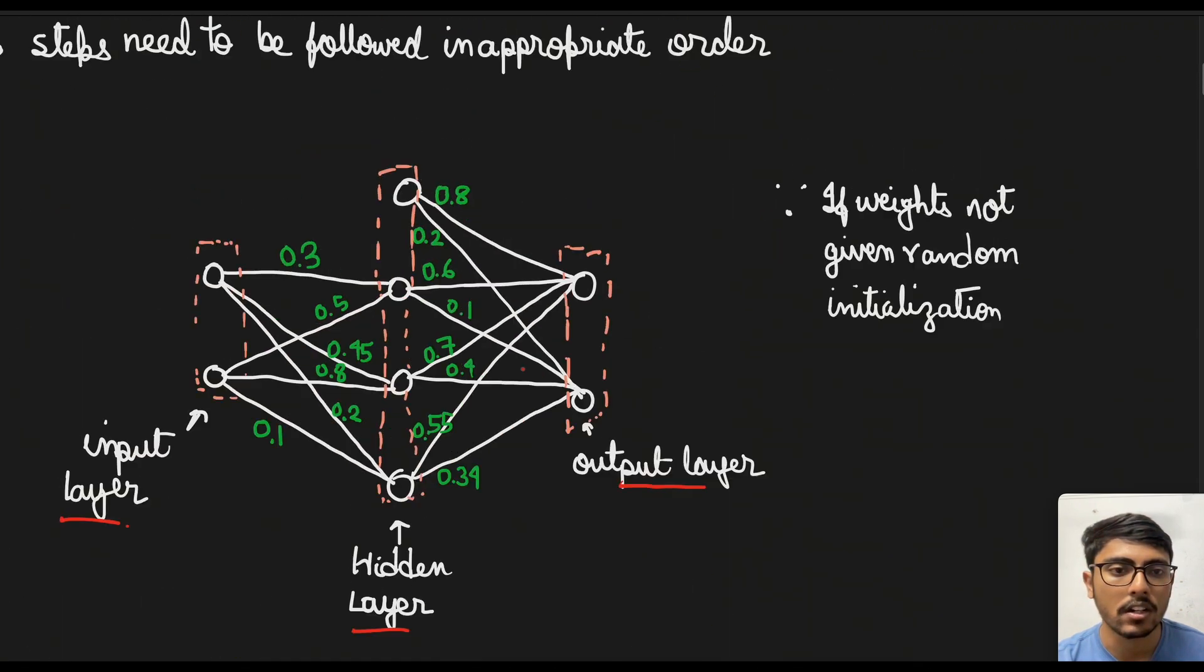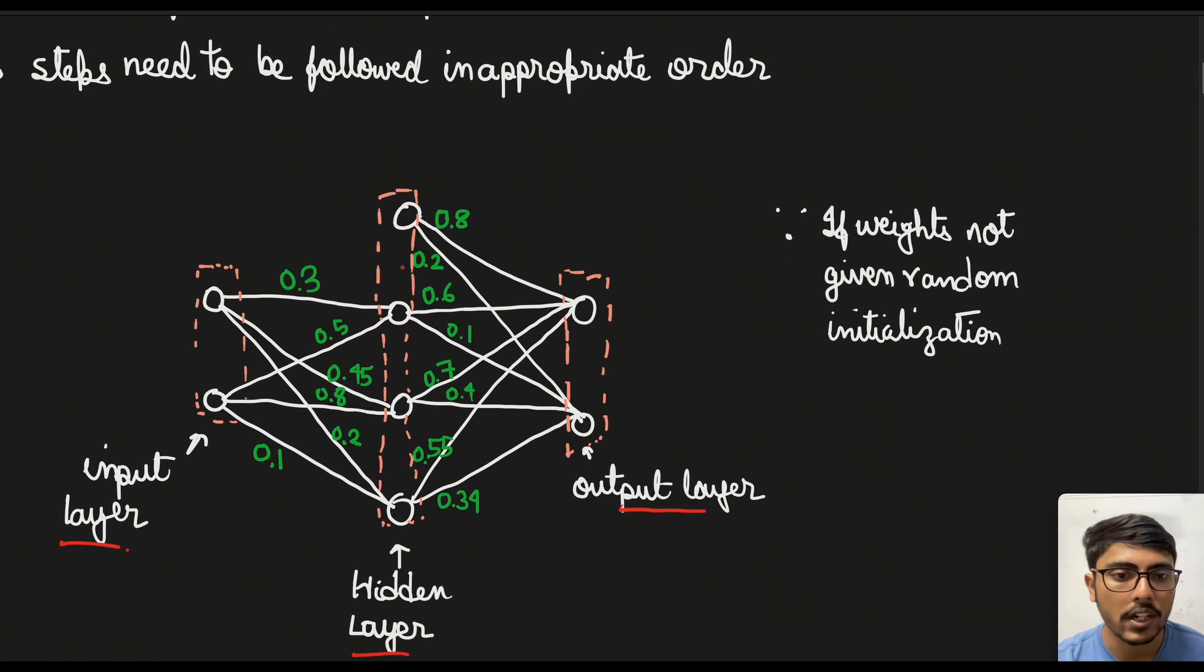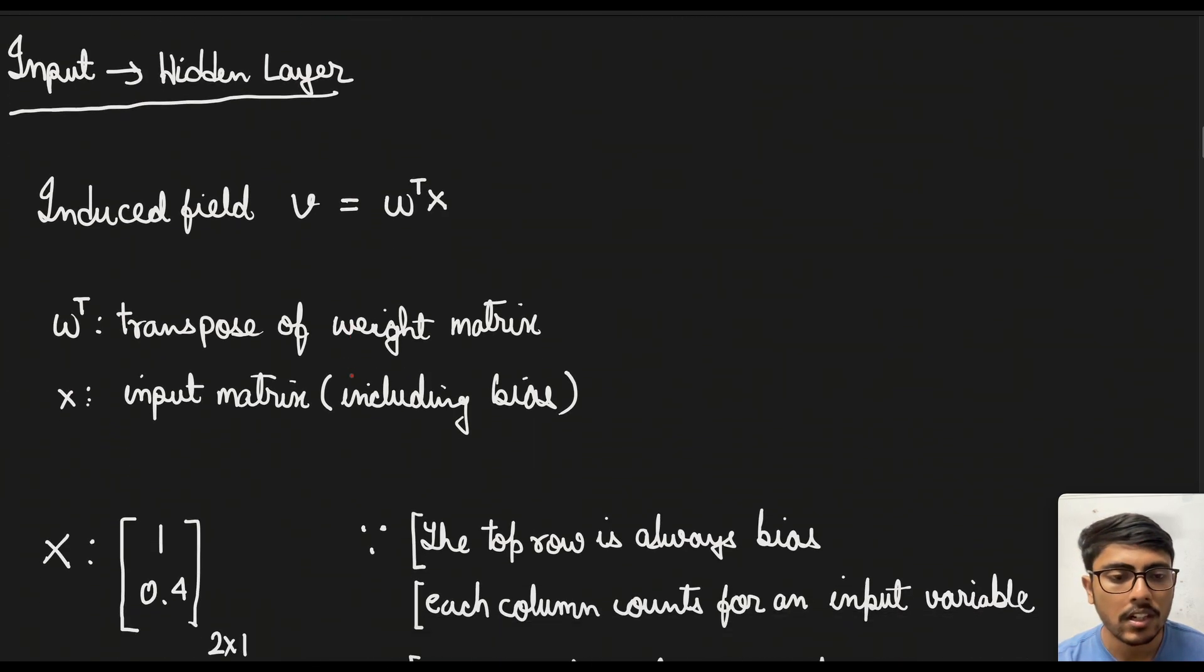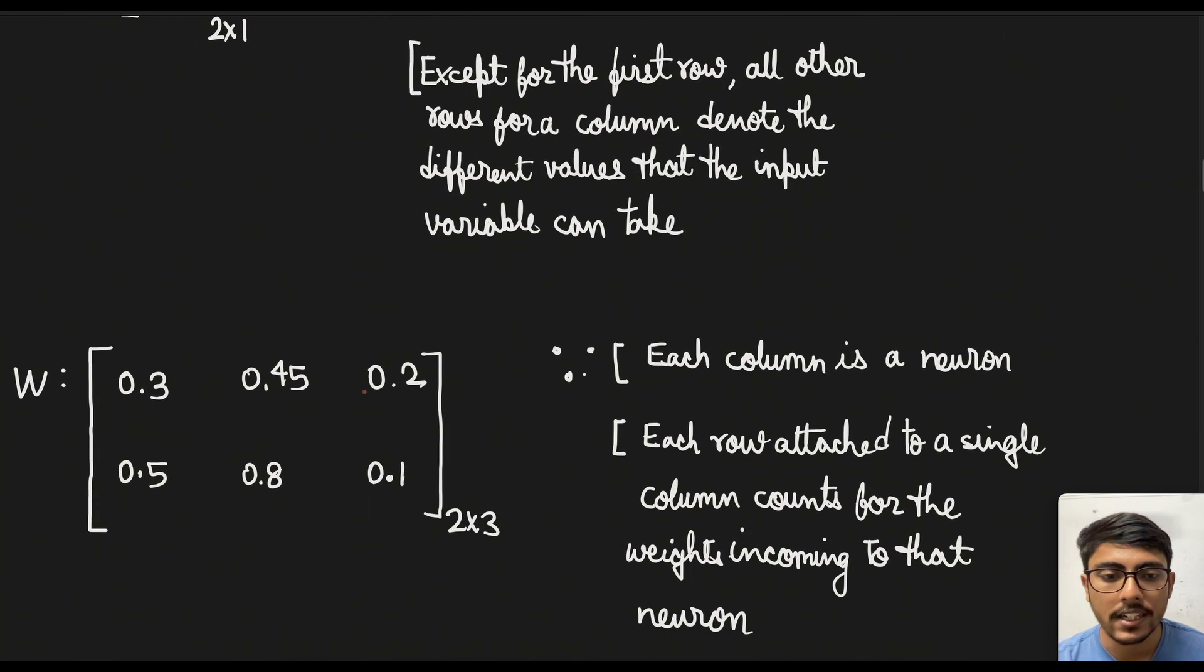And each row attached to a single column counts for the weights incoming to that neuron. Let us go back to the actual neural network. So in this case you see the hidden layer has 3 neurons. So there will be 3 columns in the weight matrix. Now for each neuron you see 2 incoming edges are there. This one and this one. So in the next neuron also there will be 2 edges and so on. So each neuron that is each column is going to have 2 rows associated to them because there are 2 weights.